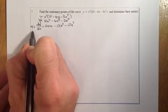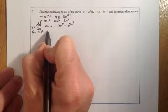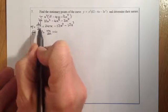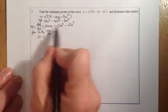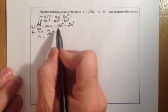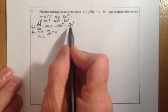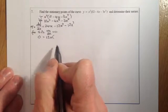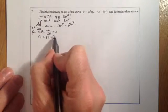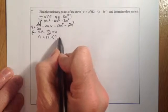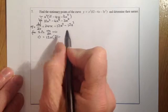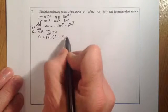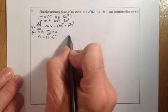For stationary points, dy/dx equals 0. I'll substitute it in and take out a common factor of 12x outside the bracket. What I've got left inside will be 2, then x, and the common factor of 12x will leave me with x squared — so 12x times 2 plus x minus x squared, with a minus in between.